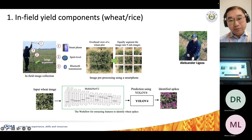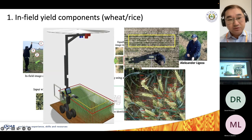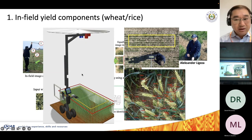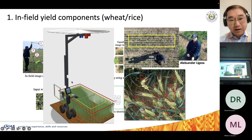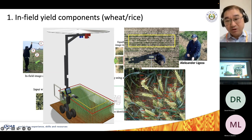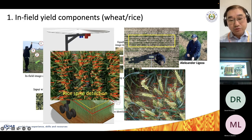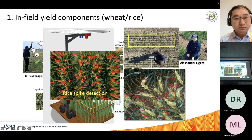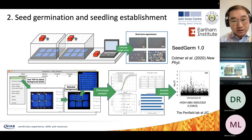Another approach we've been continuously taking is moving beyond rice to also cover wheat-based key yield components. We have been establishing a new approach using smartphones and Raspberry Pis to take images from overhead, so we can do not only rice but also wheat spike detection directly on the smartphone.